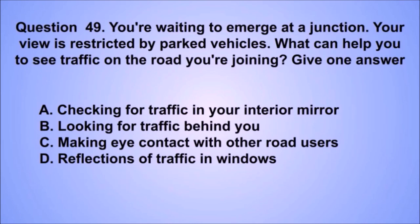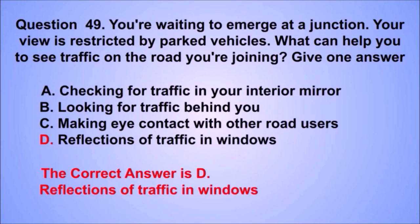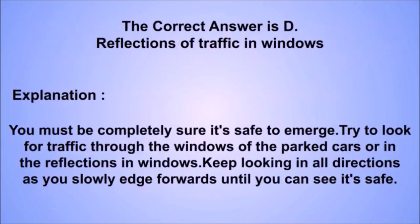Question 49. You're waiting to emerge at a junction. Your view is restricted by parked vehicles. What can help you to see traffic on the road you're joining? The correct answer is D: Reflections of traffic in windows. You must be completely sure it's safe to emerge. Try to look for traffic through the windows of parked cars or in reflections in windows. Keep looking in all directions as you slowly edge forwards.